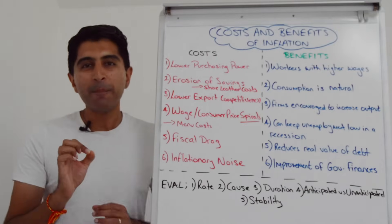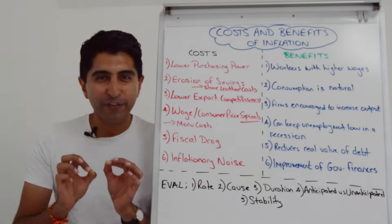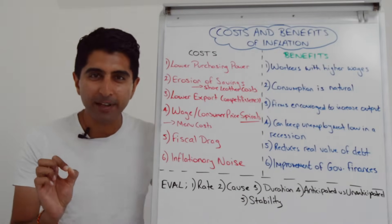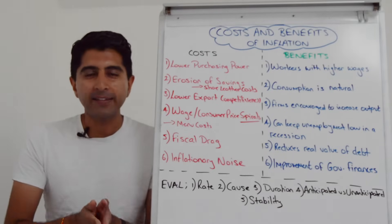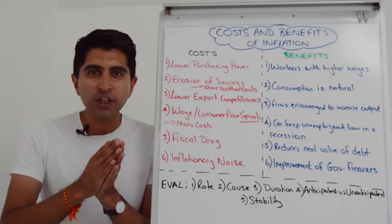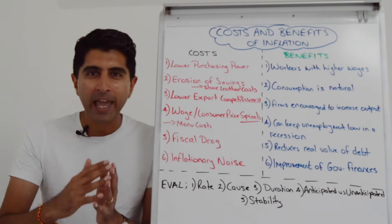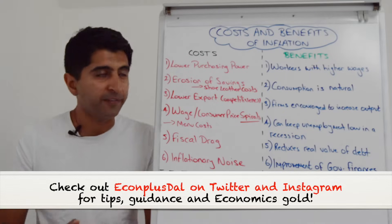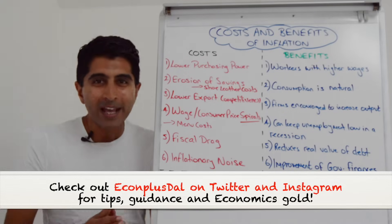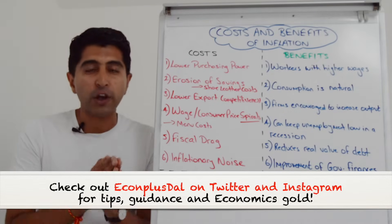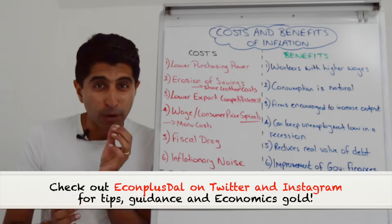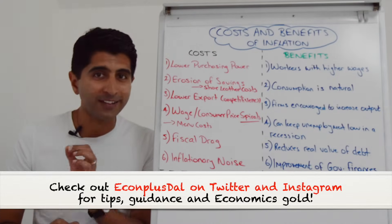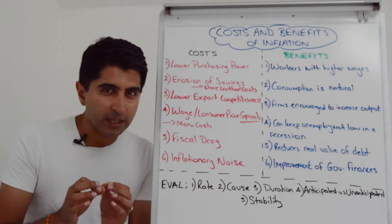The macro objective for inflation is low and stable inflation, and that implies that if inflation gets very high and out of control, there are more costs than benefits. In this video, let's look at what the costs of high inflation are, but also what the benefits of low and stable inflation are.